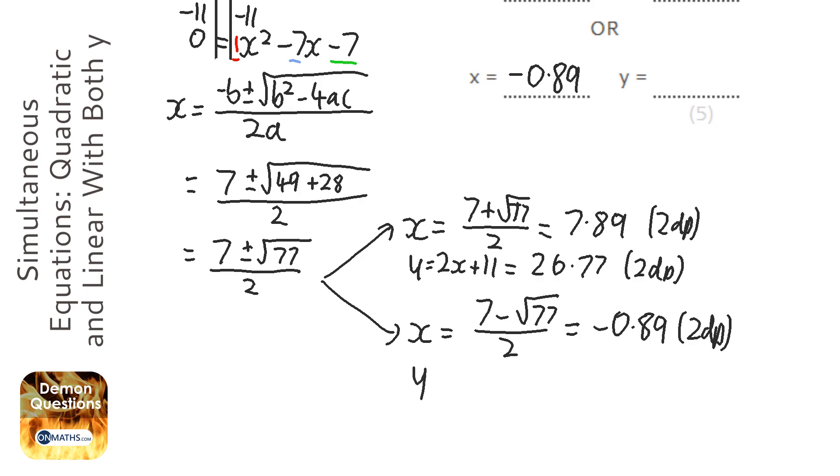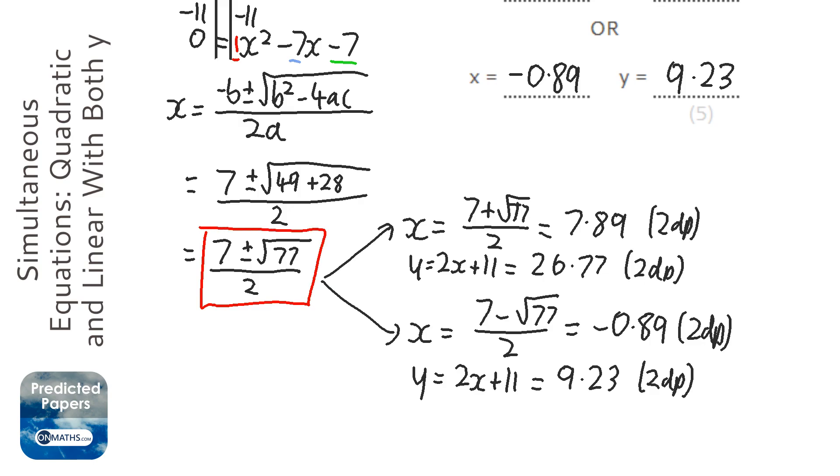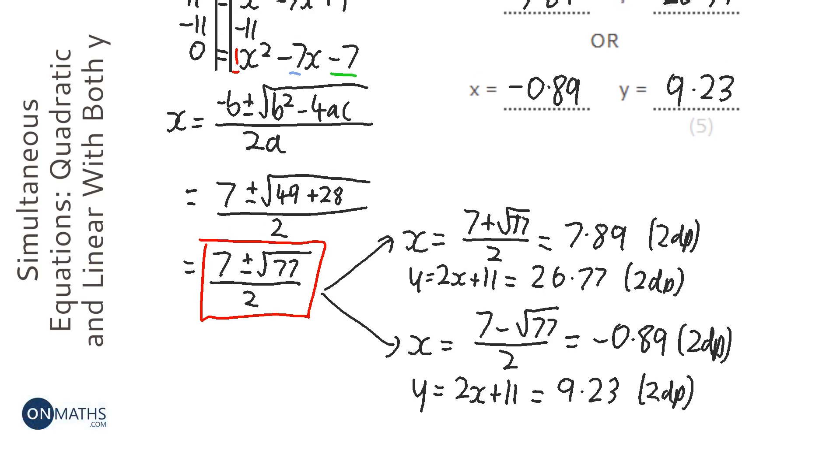And similarly, we know that y is 2 lots of x plus 11. So I'm going to times that by 2, and I'm going to add 11. And press the decimal button, so 9.23. And that's to two decimal places. So it takes a bit of time, but if you make sure you write this part here down, then you can just split it up into a positive and negative.